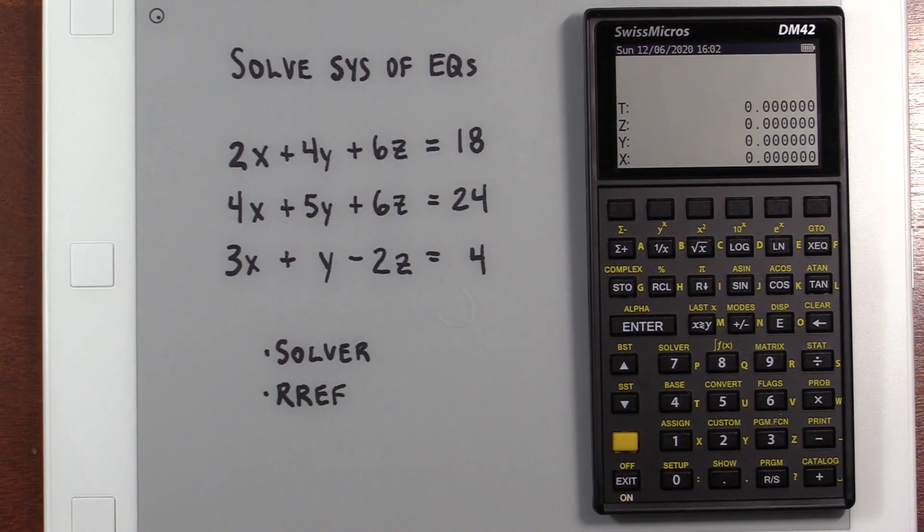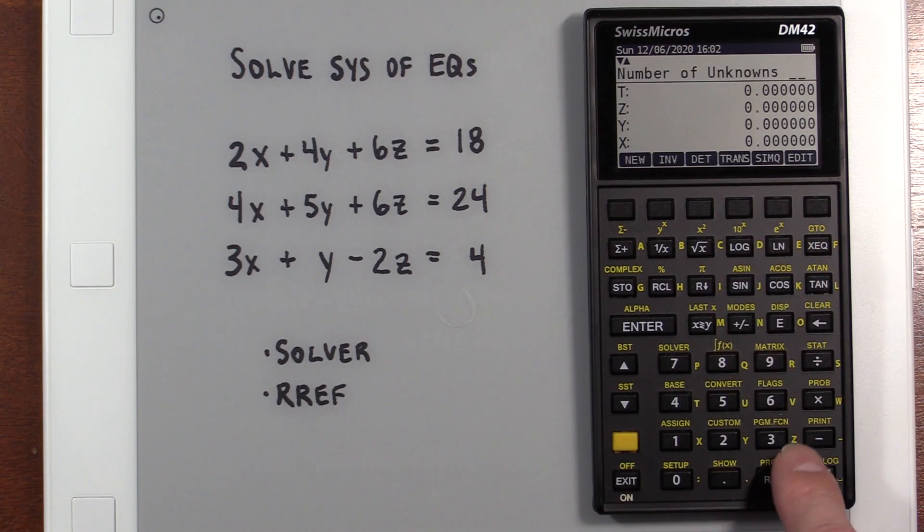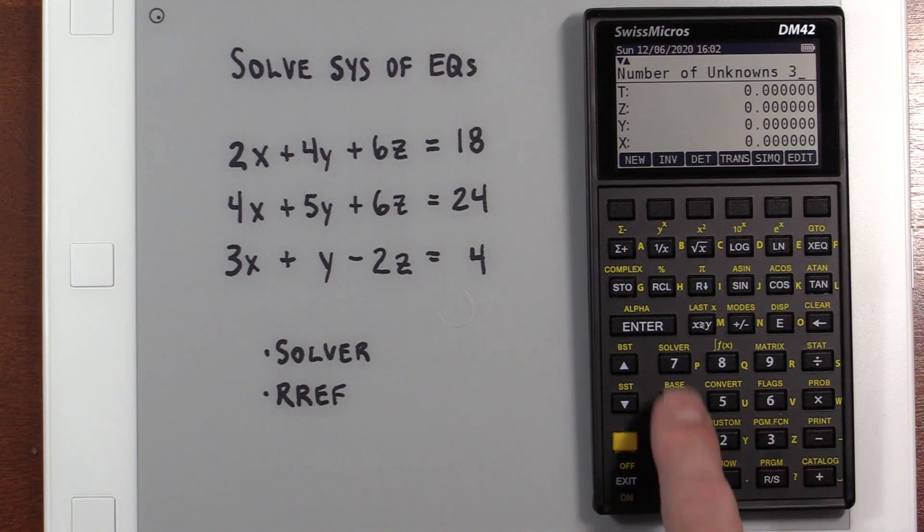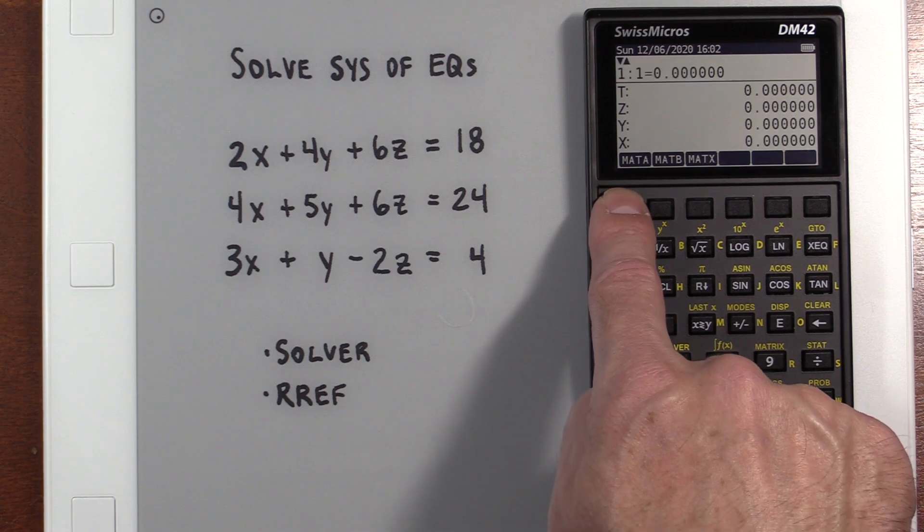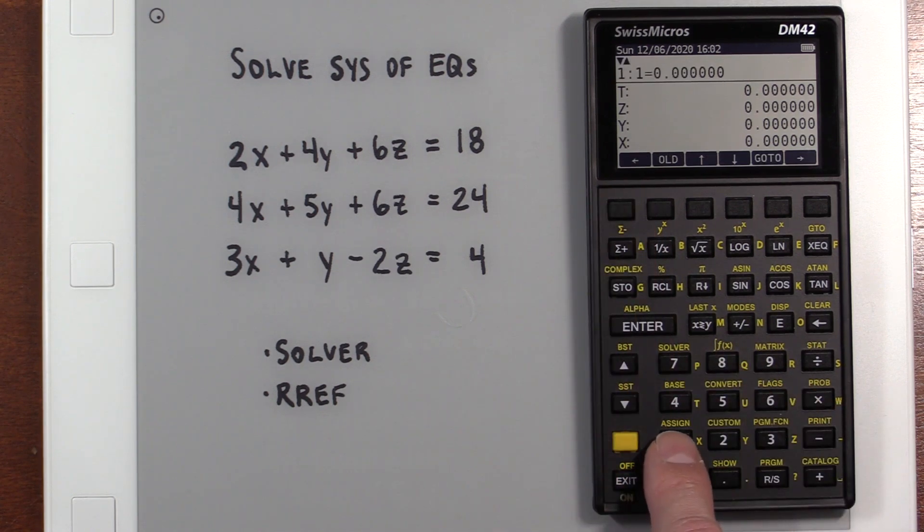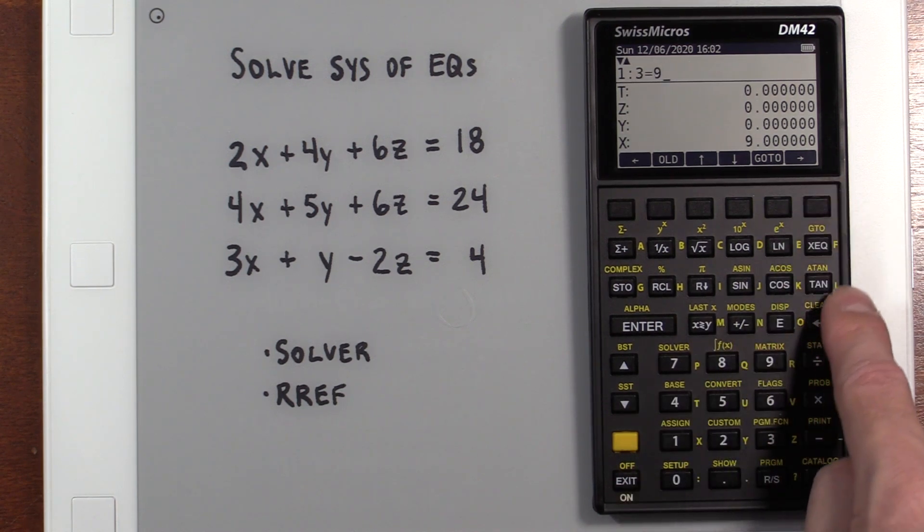Okay, let's say we want to solve a system of simultaneous equations. We go under matrix to this simultaneous equation function. We have three unknowns, X, Y, and Z. And we start by going into matrix A. It starts at row one, column one. And we just put in our two, our four, six.